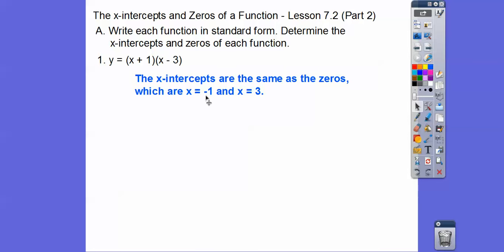When we set them equal to zero, we get x = -1 and x = 3 right there. So when I put it in standard form, we just FOIL it out and we get y = x² - 2x - 3. So first times first, outer times outer, inner times inner, last times last, and there's our answer right there.